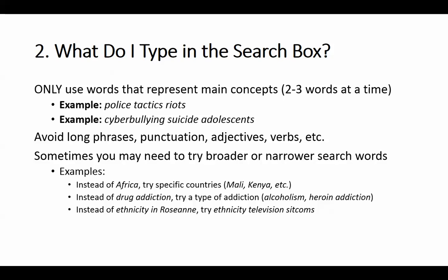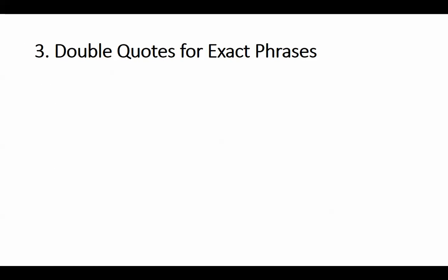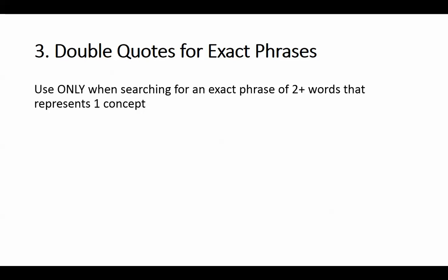Let's look at search technique number three: the use of double quotes when you want to search for an exact phrase of two or more words. Double quotes are used when one of your main concepts is a commonly used exact phrase. For example, 'human resource management' or 'Abraham Lincoln' or 'diabetes mellitus' — those words in that specific order carry a much more precise meaning than the individual words alone. Putting double quotes around such phrases tells the search tool you only want results containing those exact words in that exact order.